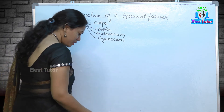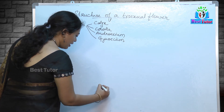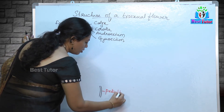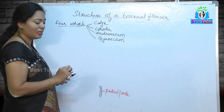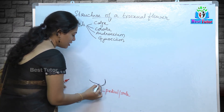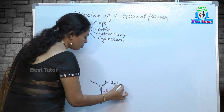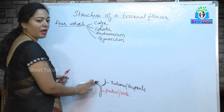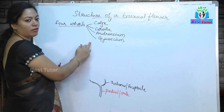Let us see by observing the diagram of a flower. Each flower, if you examine, has a stalk — we call this stalk as pedicel, or stalk of a flower. The tip of the pedicel gets expanded to form a structure known as thalamus, also called the receptacle. This is an expanded part of the pedicel, and it is the thalamus that is going to bear all four floral parts of the flower.